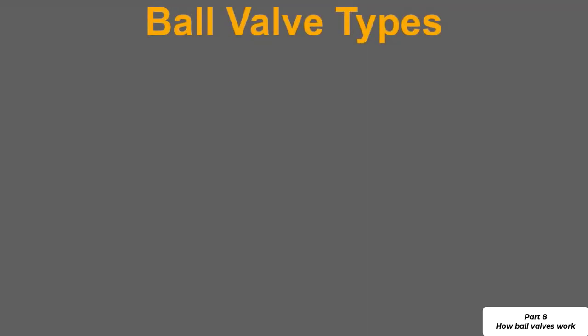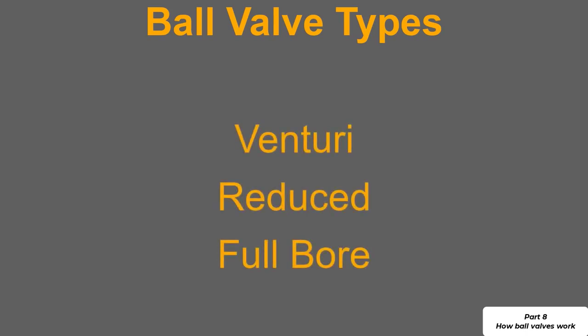There are three different types of ball valve. These are the venturi, reduced and full bore. With a full bore the ball itself will have a flow passage going through it that matches the internal diameter of the piping to which it's connected and this leads us on to some of the advantages and disadvantages of the ball valve.